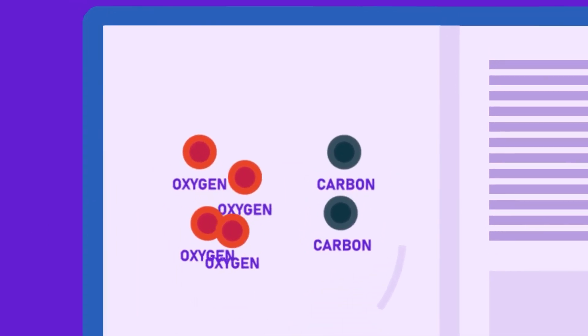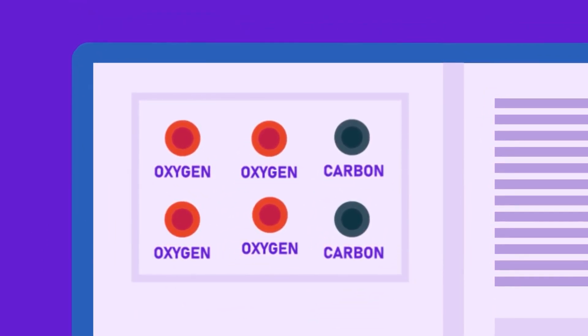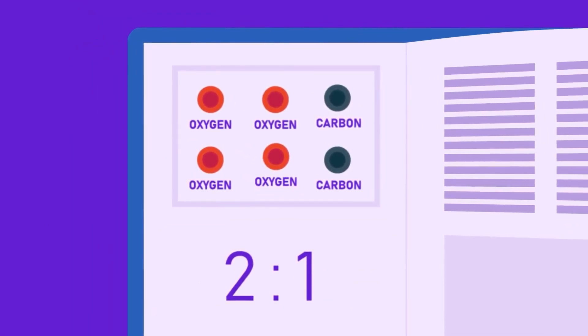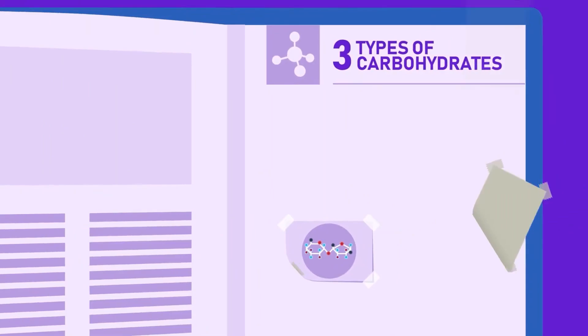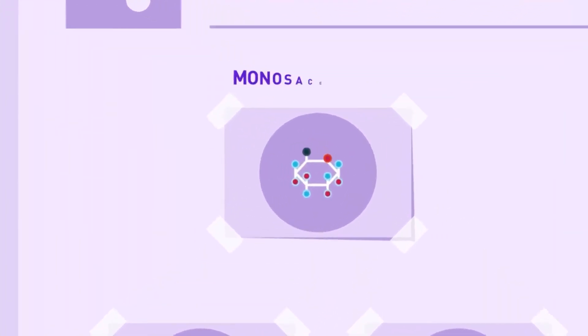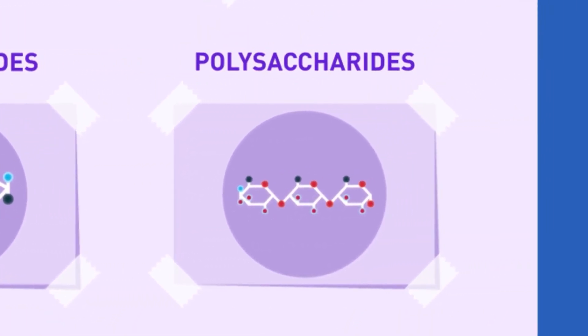The hydrogen and oxygen atoms are present in the same ratio, that is two to one. There are three main types of carbohydrates: monosaccharides, disaccharides and polysaccharides.